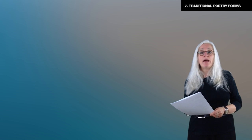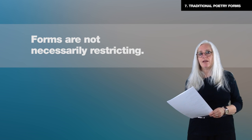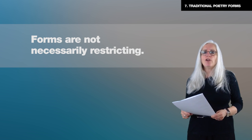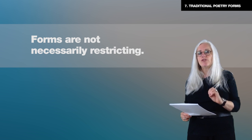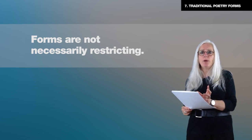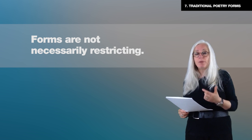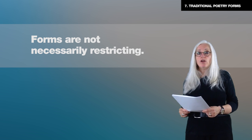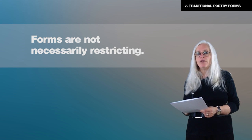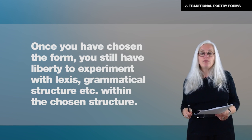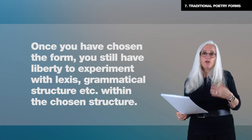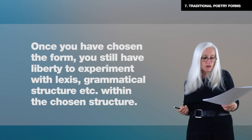One thing to realize about forms is that they're not restricting. Some poets say, oh, I don't want to bind myself to the rules of a sonnet, I don't want to follow these rules. But in fact you're not restricting yourself — what you're doing is putting a little enclosure around an area of the poem, and this allows you to experiment within that area. You've blocked off some of the tools you can't use, but this allows you to focus on others. Once you've decided on the form you want to use, you can still experiment within it — perhaps with lexis, with grammatical structure — but all within the chosen form.